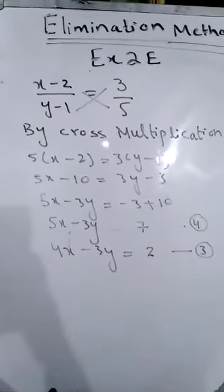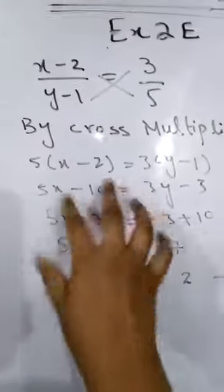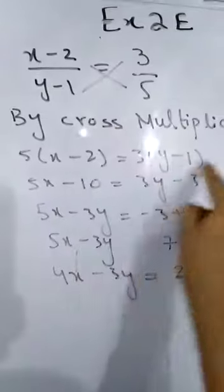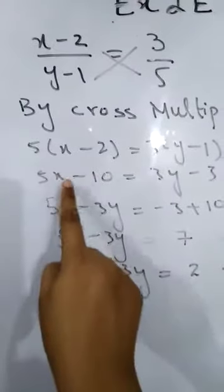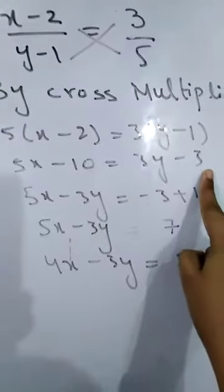Now students, we standardize equation 2 by cross multiplication: 5 into x minus 2 and 3 into y minus 1. By cross multiplication, 5x, 5 into 2 is 10, and 3y, 3 into 1 is 3.